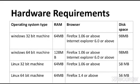Let us discuss the hardware requirements for Java software. This table specifies the hardware requirements for Java 6 on different platforms. On a Windows 32-bit machine, Java 6 requires 64 MB of RAM space and 98 MB of hard disk space, with support from web browsers like Firefox 1.06 or above and Internet Explorer version 6.0 or above.